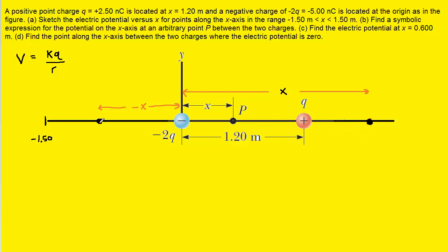Let's start for x's somewhere between negative 1.5 and 0. We're looking at this point right here, and since the distance has been marked x from the origin to point P, we can call a similar distance along the negative x direction negative x. The total electric potential at this point would be the sum of the two potentials that these charges are producing: V negative plus V positive.